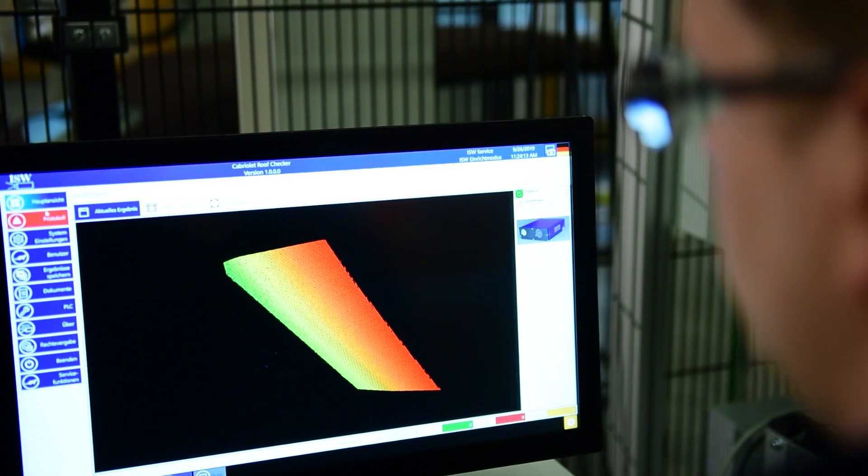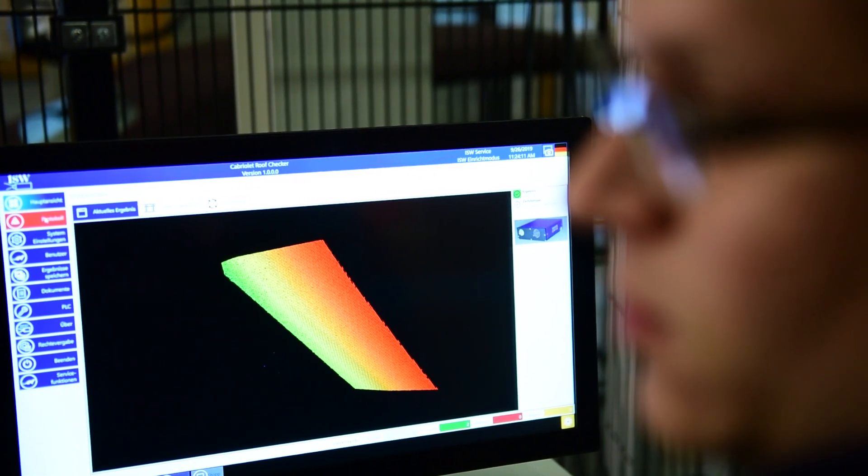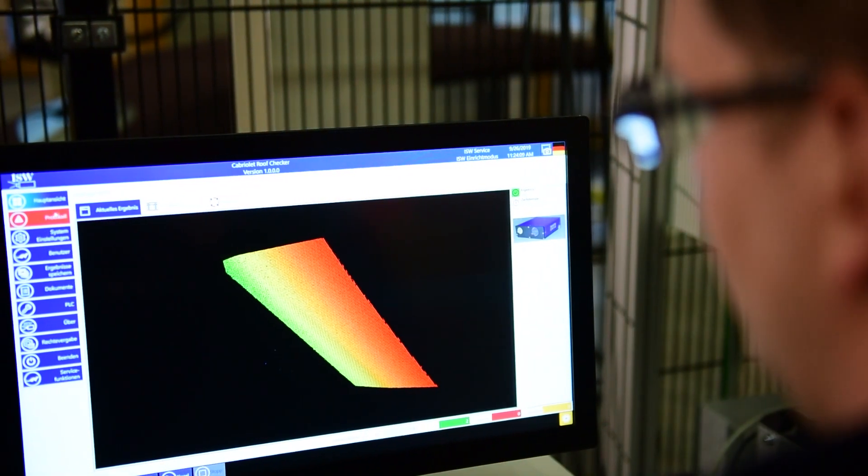ShapeDrive offers a resolution of 12 megapixels and can measure extremely precisely thanks to the structured light that is projected onto the convertible roof. This means that we can achieve a resolution of 9 micrometers in z and work at a distance of 220 to 320 millimeters. The recorded point clouds are sent directly to an evaluation unit via a 10 gigabit interface.